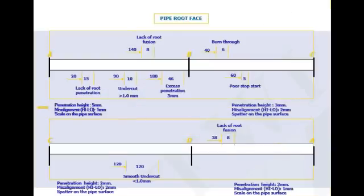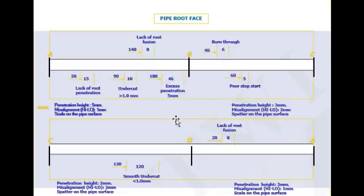For the pipe root face, the same measurement types apply. From the datum line: at 20 mm there is a 15 mm lack of root penetration; at 90 mm there is a 10 mm undercut. You must fill in the complete weld segment and root area on the sketch. The full sketch of the pipe root face and pipe weld face should now be clear.